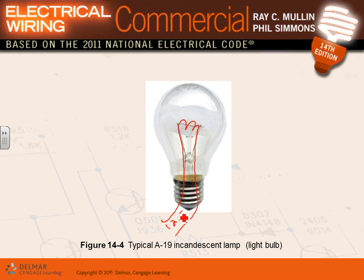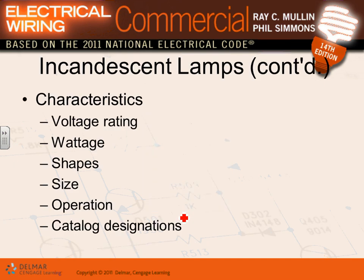Incandescent lamp characteristics: they come in different voltages, wattages, different shapes and sizes. Operation life is about 1000 hours — really poor. They have different catalog designations for shapes and can come at low voltage — 12 volts, 6 volts, or 24 volts — as seen in refrigerators and other applications besides buildings. They will continue to exist in other applications where they make sense.